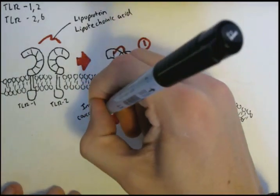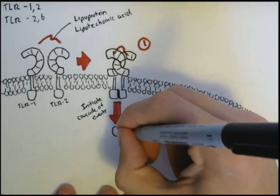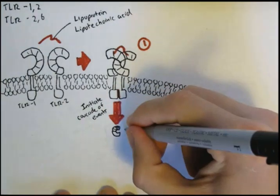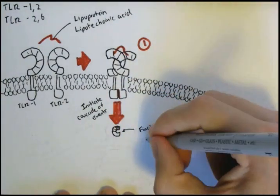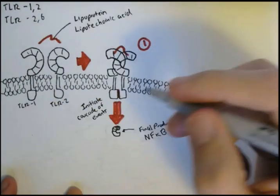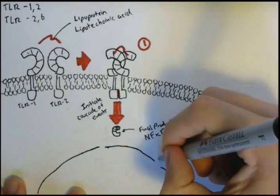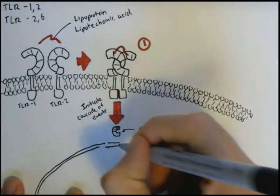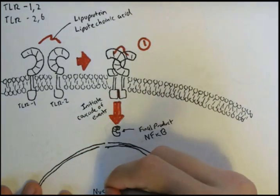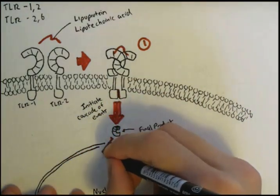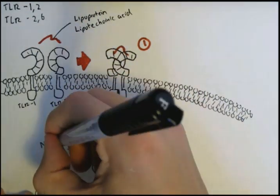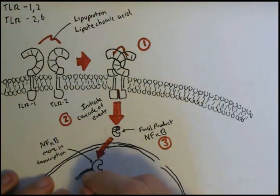The second step is that a cascade of events occur within the cytosol, but we won't really go into this that much because it's boring. But the final product is NFKB anyway, and this is our step 3. Now NFKB is a transcription factor and can enter the nucleus, where it synthesizes and transcribes the gene inside the nucleus for cytokines. Now this is our step 4.